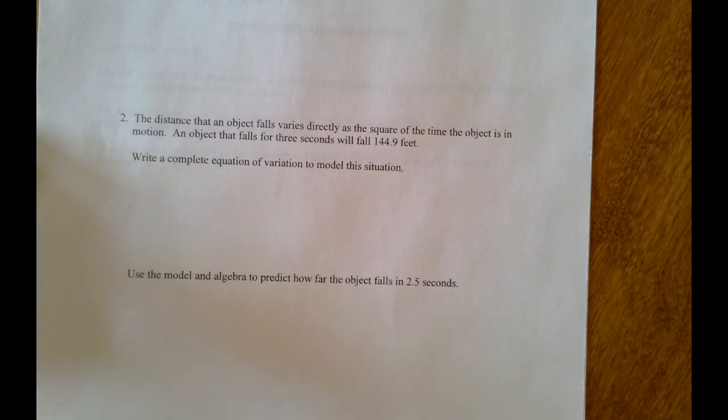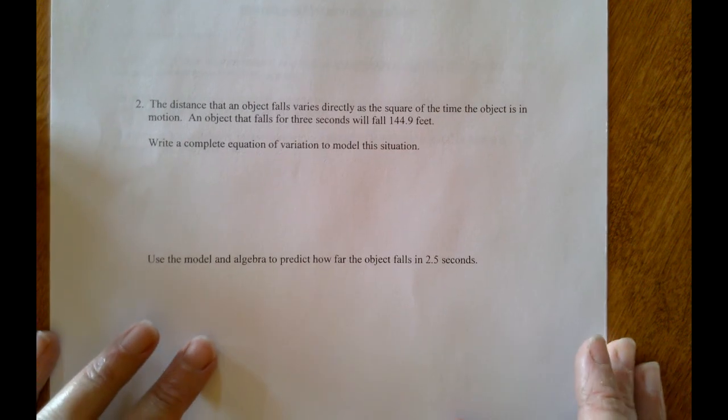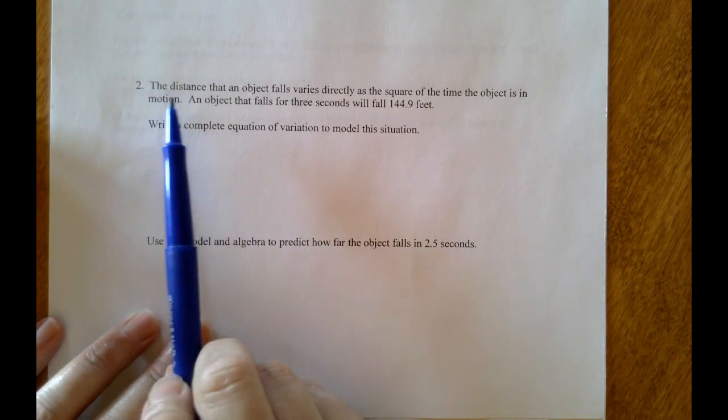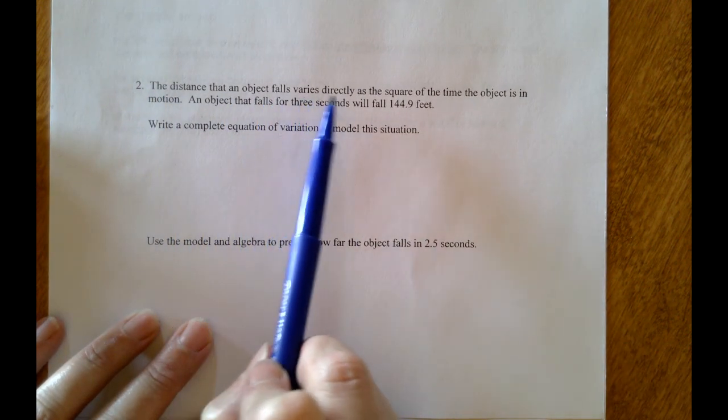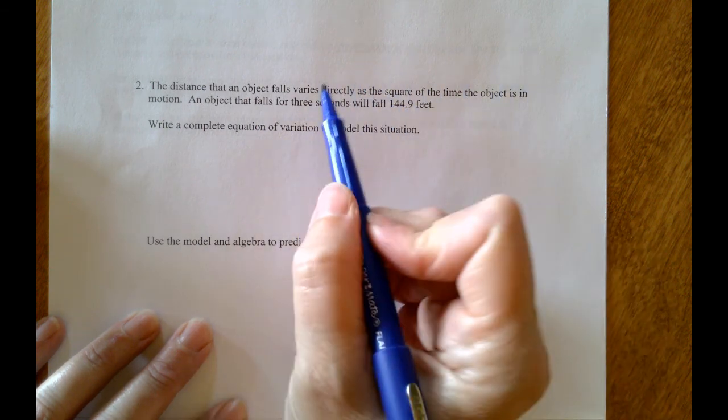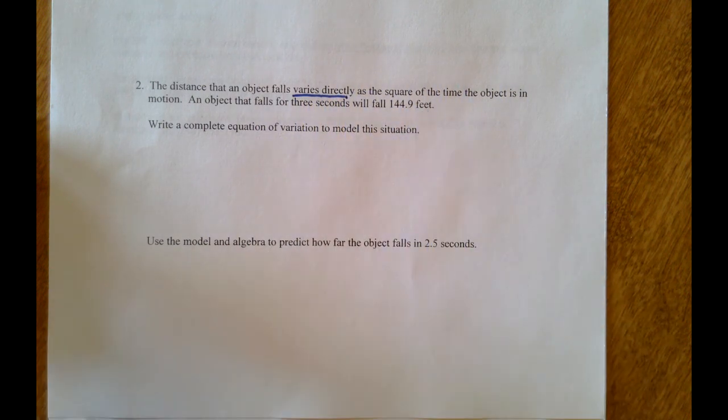As an application problem for variation: the distance that an object falls varies directly as the square of the time the object is in motion. An object that falls for three seconds will fall 144.9 feet. This is kind of a physics example.